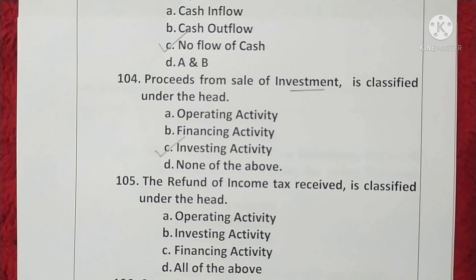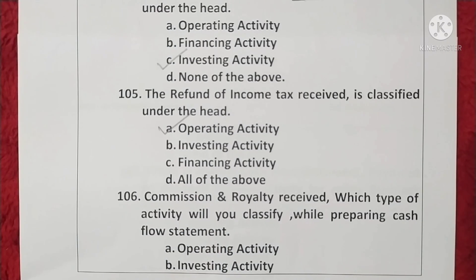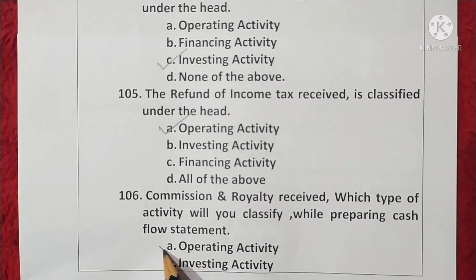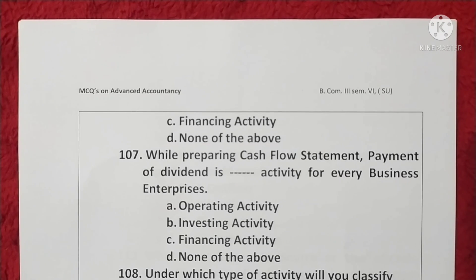Question 105. The refund of income tax received is classified under the head operating activity. Option A is correct. Question 106. Commission and royalty received — commission and royalty received are regular earnings and classified as an operating activity. Option A is correct. Question 107. Payment of dividend is a financing activity for every business enterprise. Option C is correct.